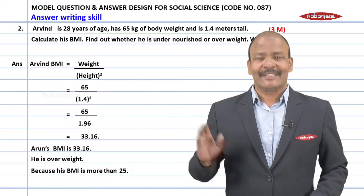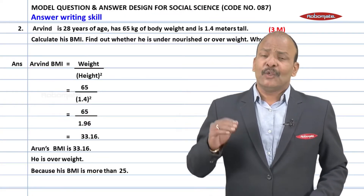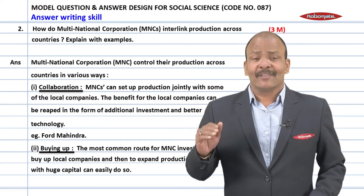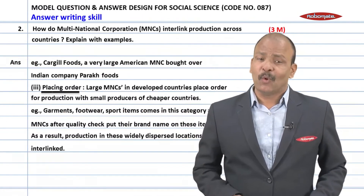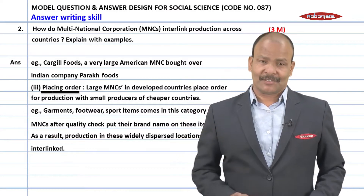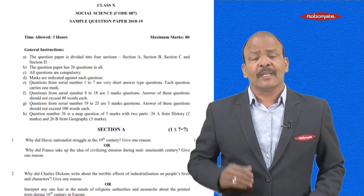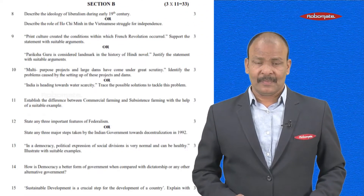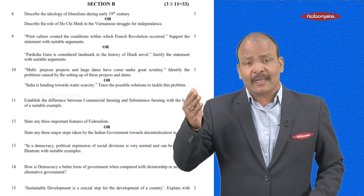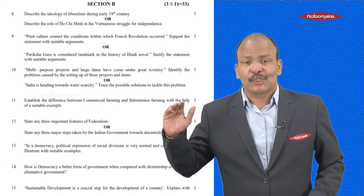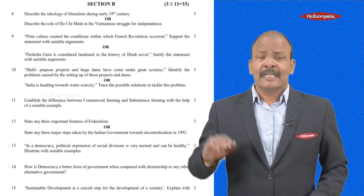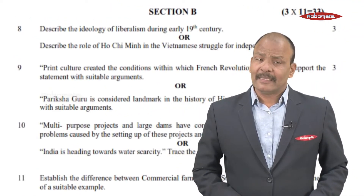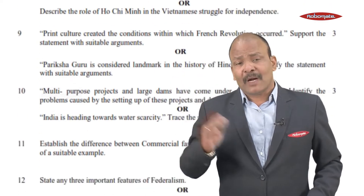For Section B, you have to answer in three sentences and your answer should be to the point and should not exceed more than 80 words. One more thing to remember is that from Section A and Section B, some questions will also have choices - that is, some questions will also have an optional one with the word 'or'.